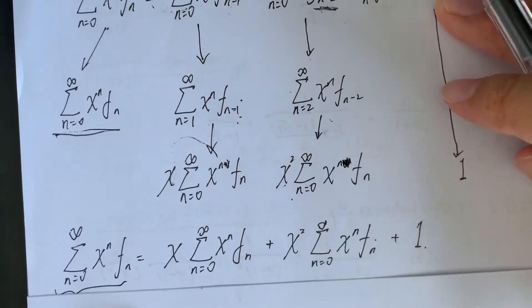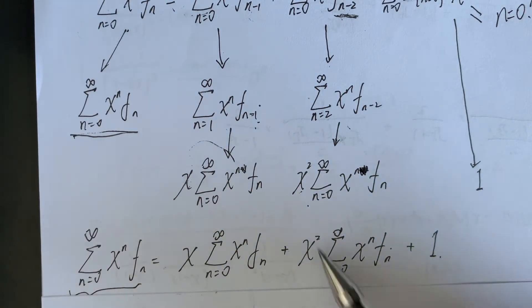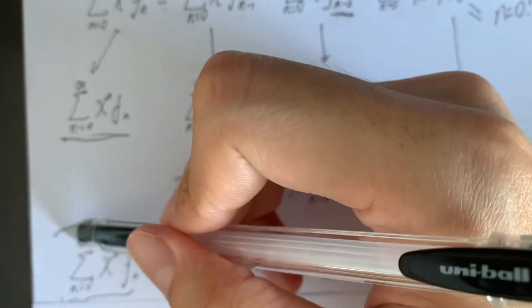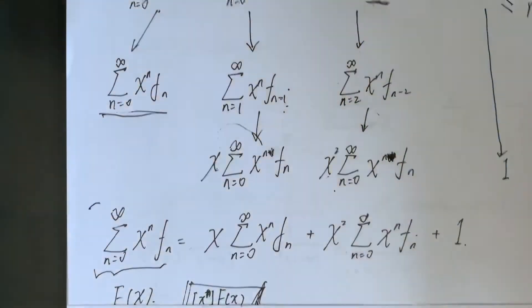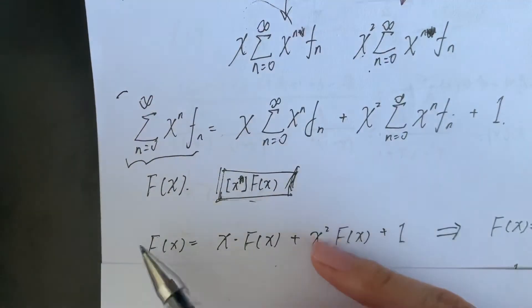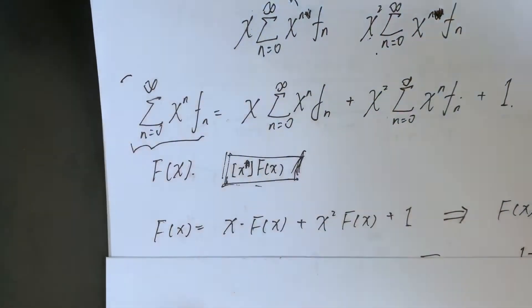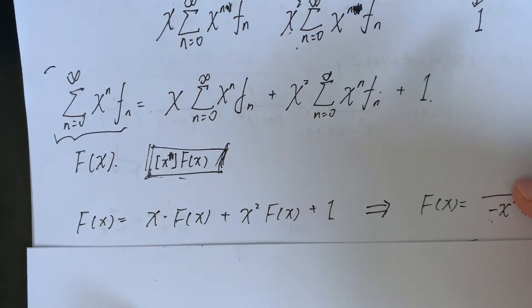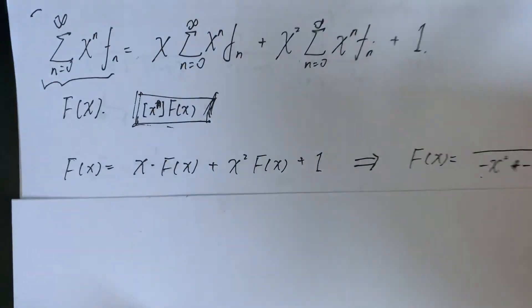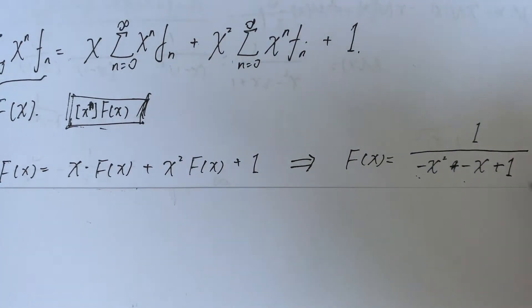So the full summation F(x) satisfies: F(x) equals x·F(x) plus x²·F(x) plus 1. This is easily solved for F(x): F(x) equals 1 over (1 - x - x²).